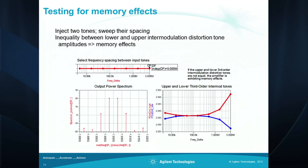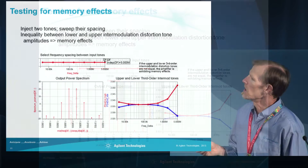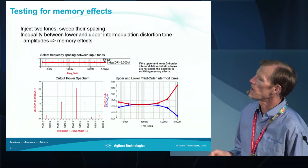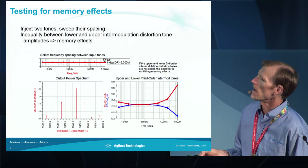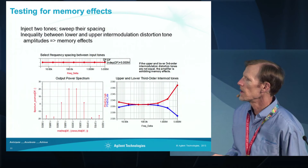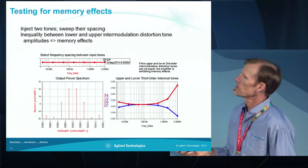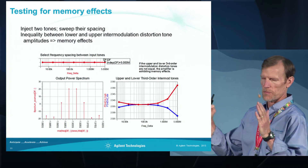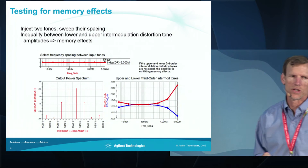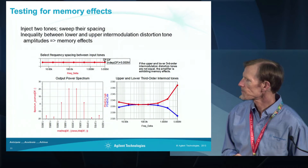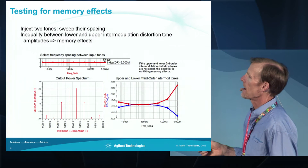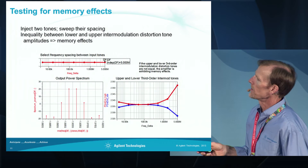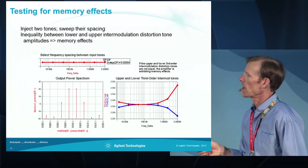This is a test for memory effects, which could be done with a physical amplifier or with a simulation. If you apply a two-tone input signal to an amplifier and sweep the tone spacing, if the intermodulation distortion terms do not remain equal to each other as you sweep the tone spacing, that's an indication that your amplifier has memory effects present. This particular design does not have much memory effects — there's a little bit, but the y-axis scale is very fine, so there's not much present in this case.